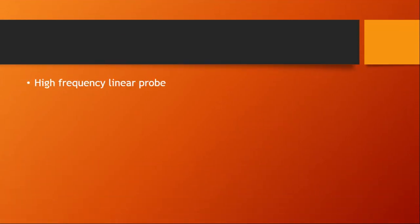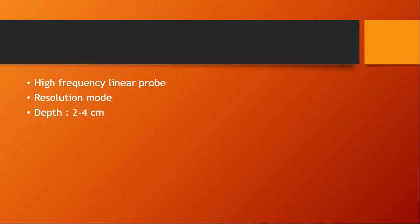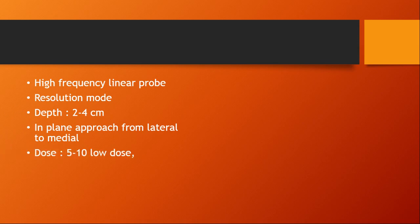For ultrasound parameters, a high-frequency linear probe is generally used in average-build patients, but a curvilinear probe can be used for obese patients. Use resolution mode with depth set to 2 to 4 centimeters, in-plane approach from lateral to medial. The dose I generally use is 5 to 10 ml for low dose; if a high dose is needed, 20 to 30 ml can be utilized.